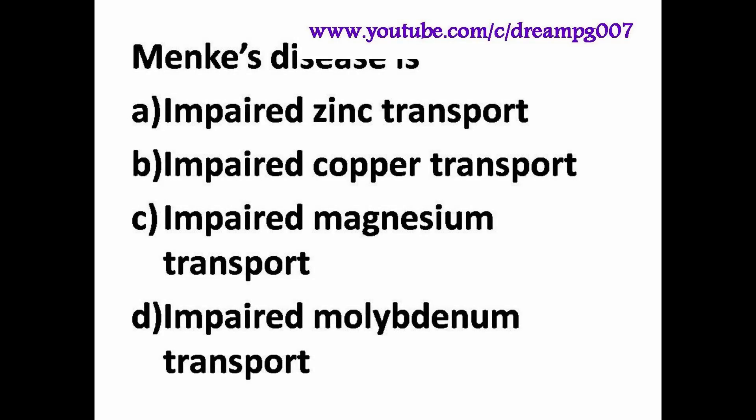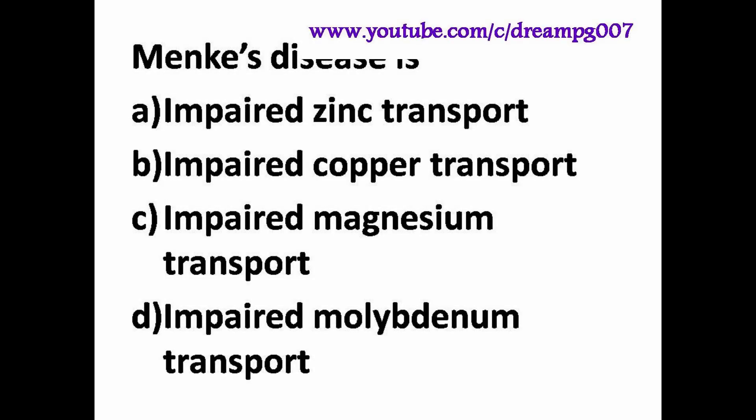Hi friends. Menkes disease is: Option A - Impaired Zinc Transport, Option B - Impaired Copper Transport, Option C - Impaired Magnesium Transport, Option D - Impaired Molybdenum Transport.